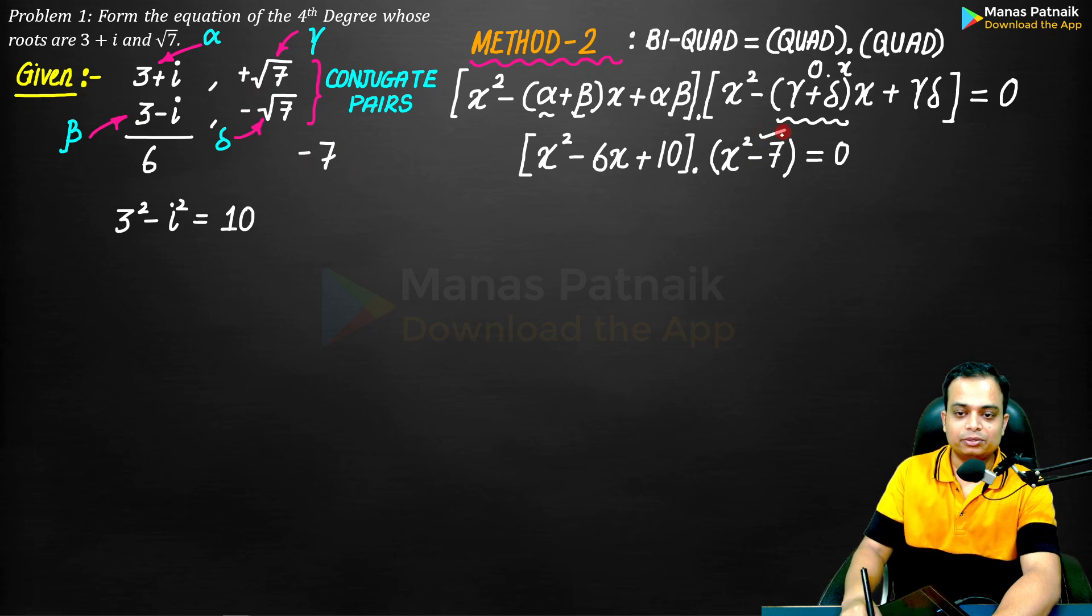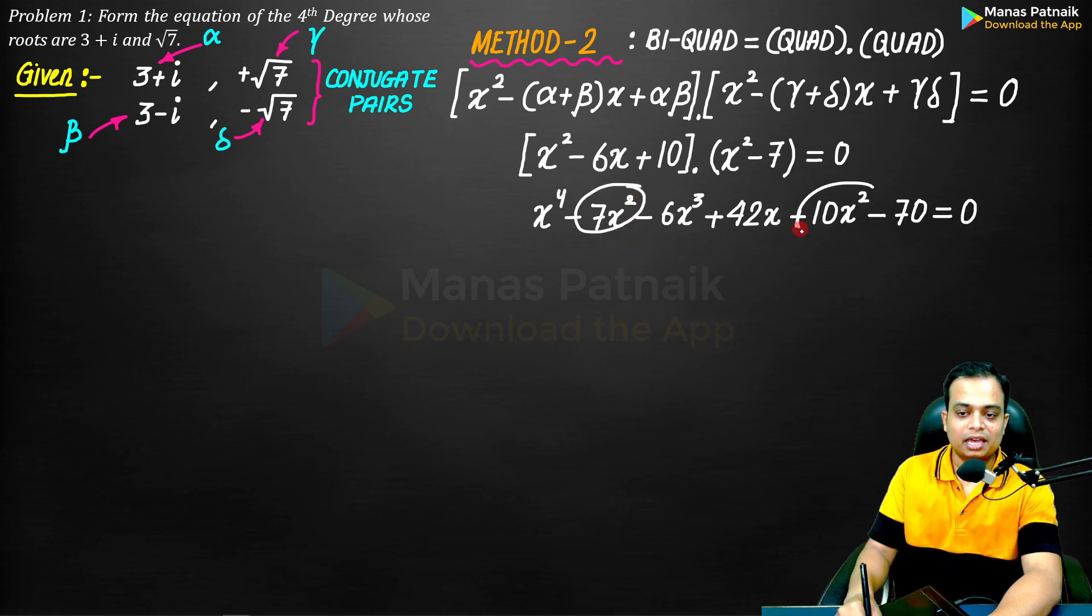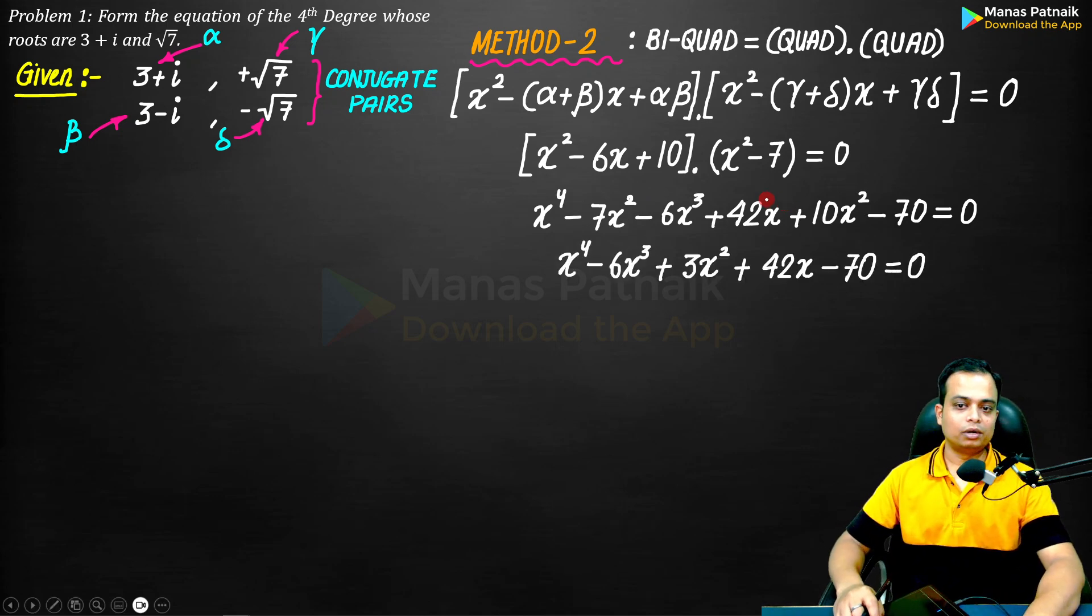And that's why you see minus 7 over here. Again the same stuff is repeating itself. It can be simplified further - 7x square and 10x square, just do the math. This is so damn easy.